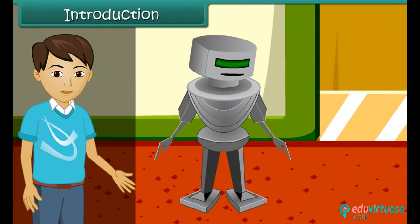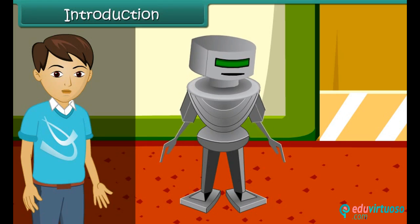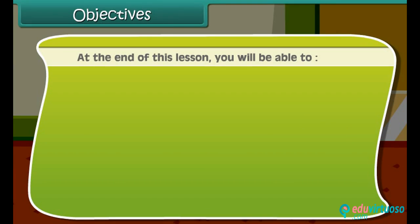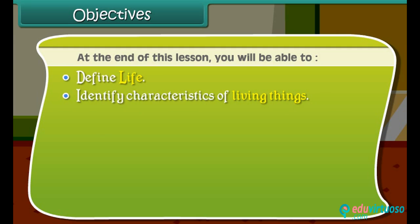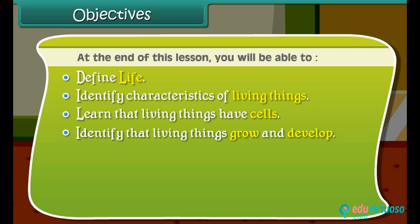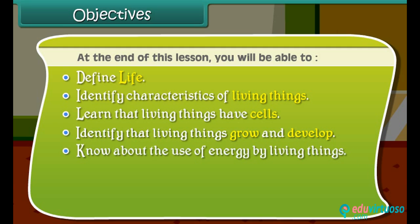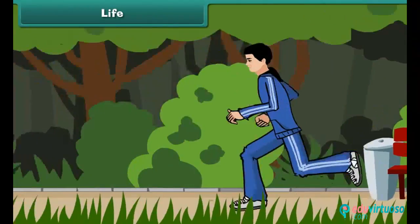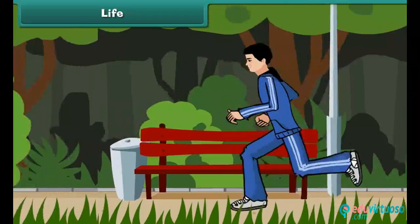Children, in this lesson we will learn about the characteristics of living things. At the end of this lesson you'll be able to: define life, identify characteristics of living things, learn that living things have cells, identify that living things grow and develop, and know about the use of energy by living things. You will also identify that living things sense and respond to change, and discuss that living things reproduce.